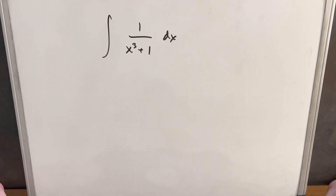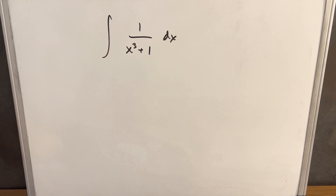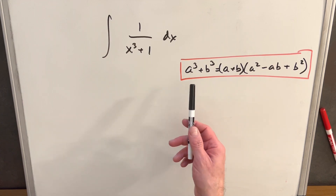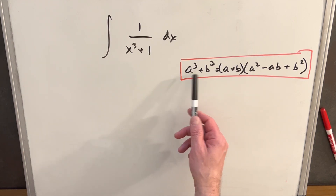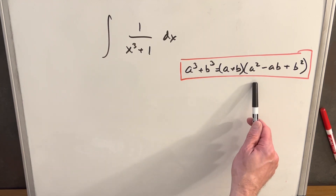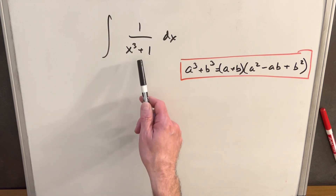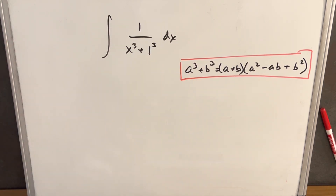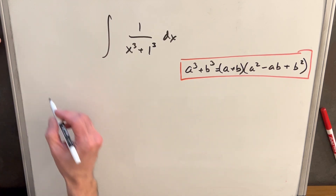We have another interesting integral: 1 over x cubed plus 1 dx. What I want to do before anything else is look at our sum of cubes formula. We have it on the right: a cubed plus b cubed, which can be broken up using this formula. We just want to notice that x cubed plus 1 can be written with 1 cubed, and then we can use this formula.